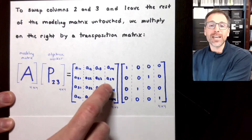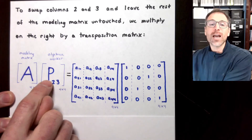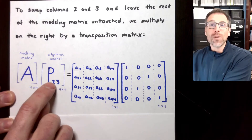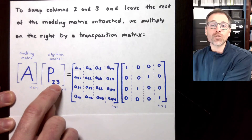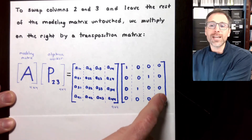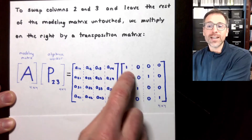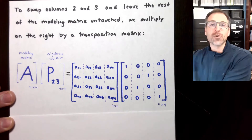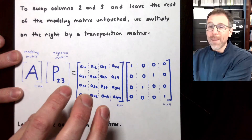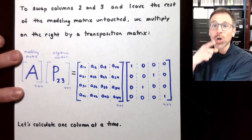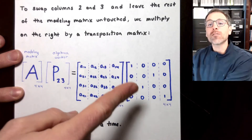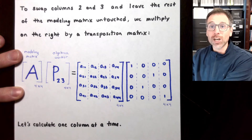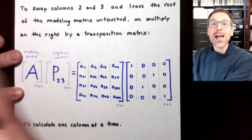To do that, we're going to use a transposition matrix. If you need a refresher on what the transposition matrix is, go back and watch our previous videos. Specifically, to swap columns two and three, we're going to use the transposition matrix P subscript 2,3. Since we want to manipulate the columns of A, we multiply A on the right by that transposition matrix — so A times P₂₃. A is a general four by four matrix, and P₂₃ will also be four by four. This permutation matrix is the four by four identity matrix where we swap columns two and three.